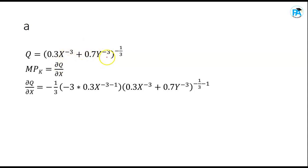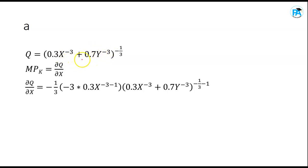Inside the bracket, differentiating with respect to x: multiply the coefficient 0.3 by the inner exponent -3, giving -3 × 0.3, times x^(-3-1). The y term has no x, so it becomes zero. Then repeat the original bracket expression and subtract 1 from its exponent.